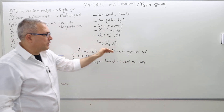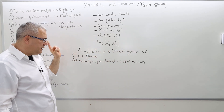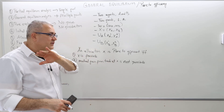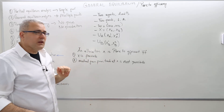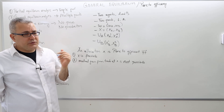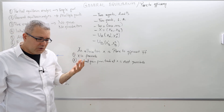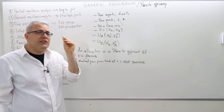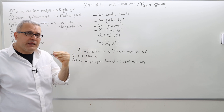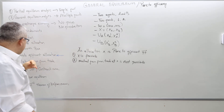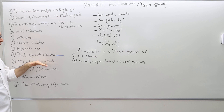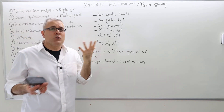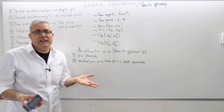An allocation x is Pareto efficient if and only if x has to be feasible, and two, mutual gain from trade at x is not possible. Some textbooks also define Pareto efficiency as follows: an allocation is Pareto efficient if there is no way to make one agent better off without hurting the other agent. That's exactly what we mean by mutual gain from trade is not possible — it's just another way of saying the same thing.